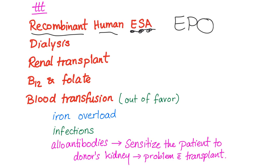Dialysis and renal transplant are options, of course, if chronic kidney disease is at stage 4 or 5 — especially stage 5, which is end-stage kidney disease. B12 and folate supplementation is also given because B12 and folate deficiency is one of the causes of anemia in these patients.